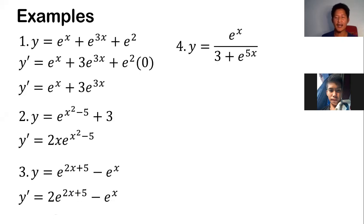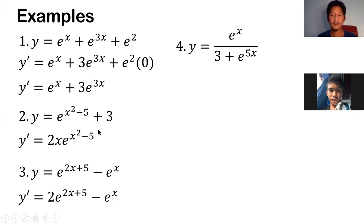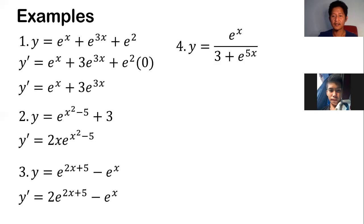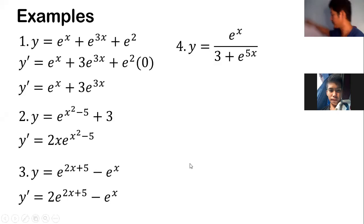Example 4 incorporates other theorems we had. Notice we have a quotient, so we'll use the quotient rule together with rules 7 and 8. We can consider the numerator as u — that's e to the x — and the denominator as v — that's 3 plus e to the 5x.